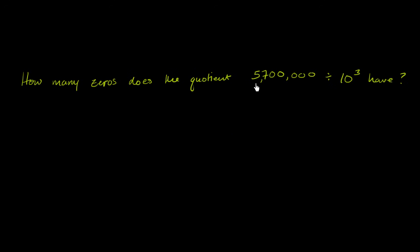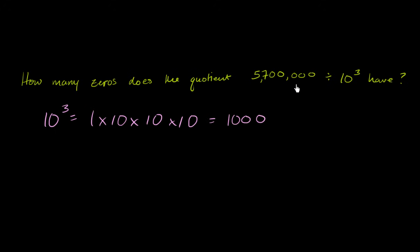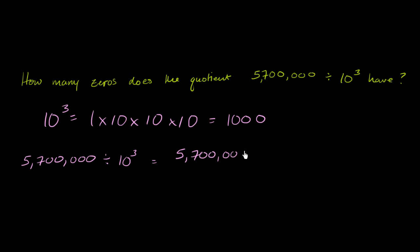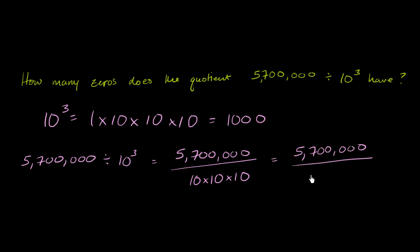How many zeros does the quotient 5,700,000 divided by 10 to the third power have? Well, 10 to the third power is the same thing as 1 times 10 times 10 times 10, which is 1,000. So 5,700,000 divided by 10 to the third is the same thing as 5,700,000 divided by 10 times 10 times 10, which is equivalent to 5,700,000 divided by 1,000.